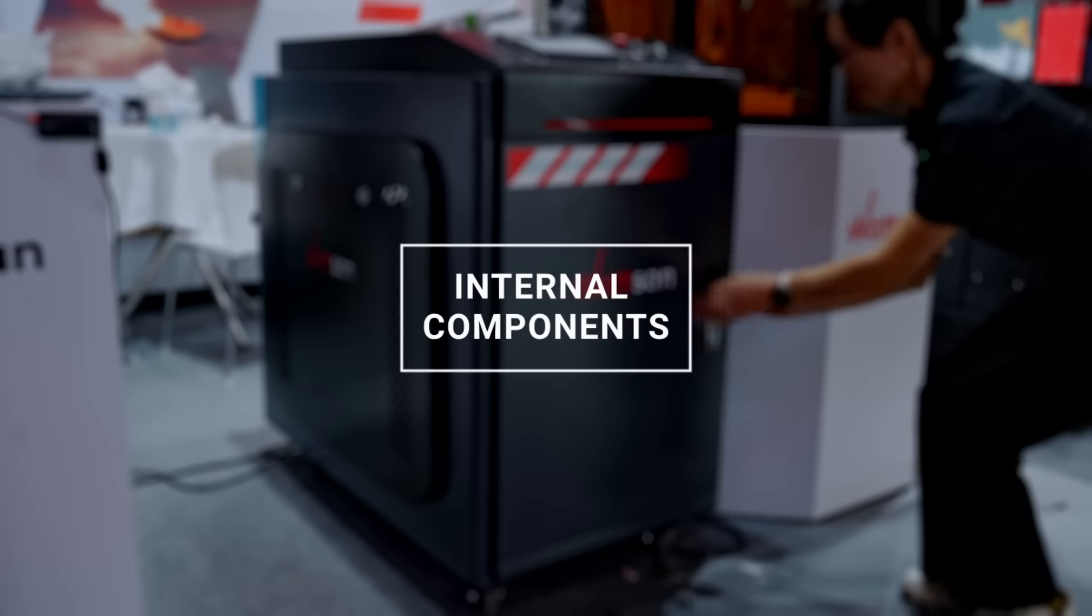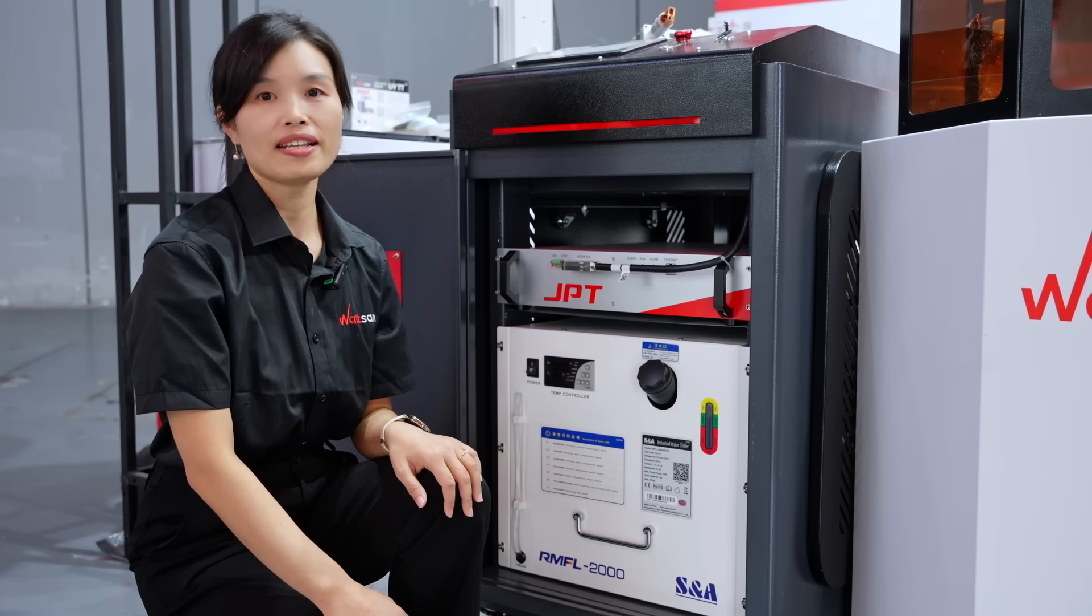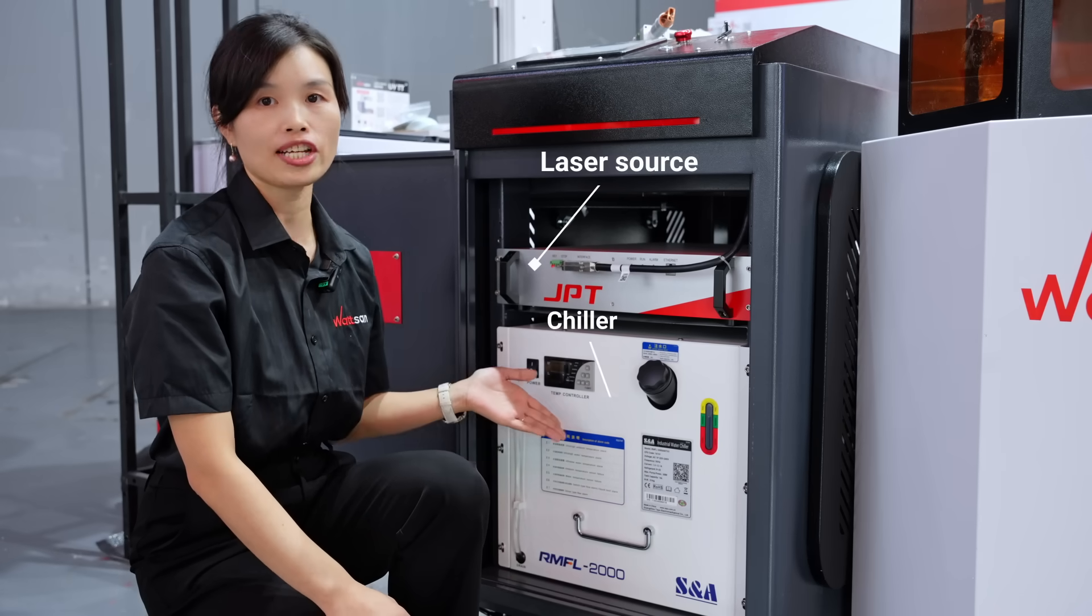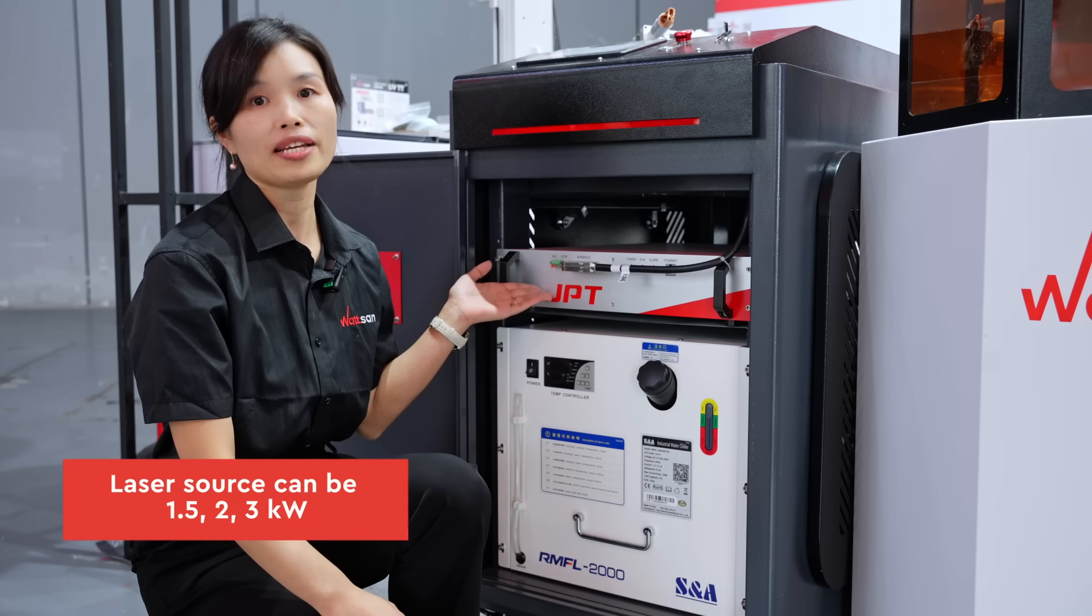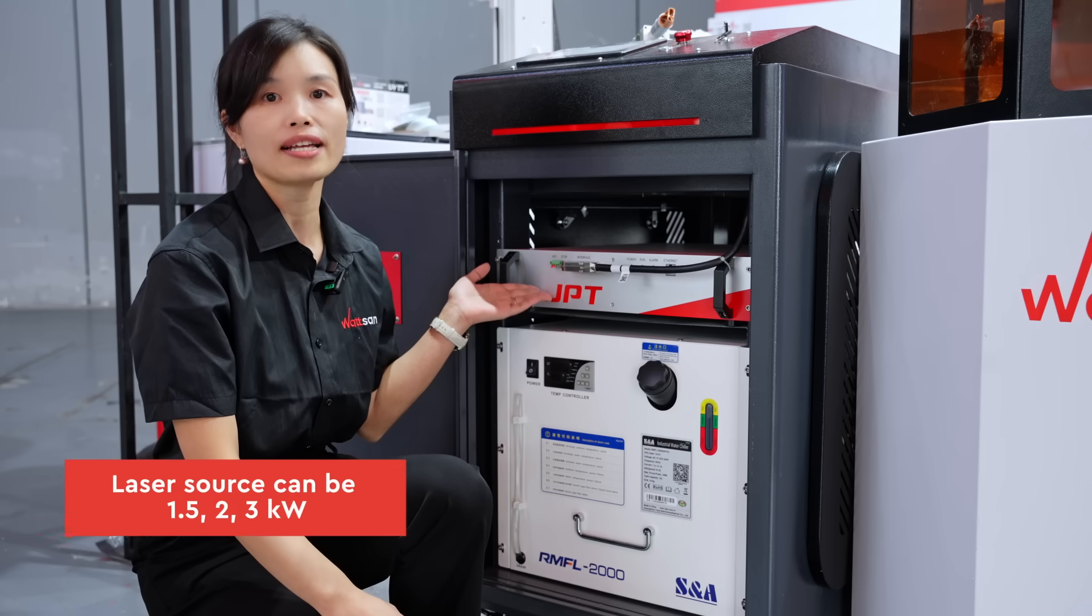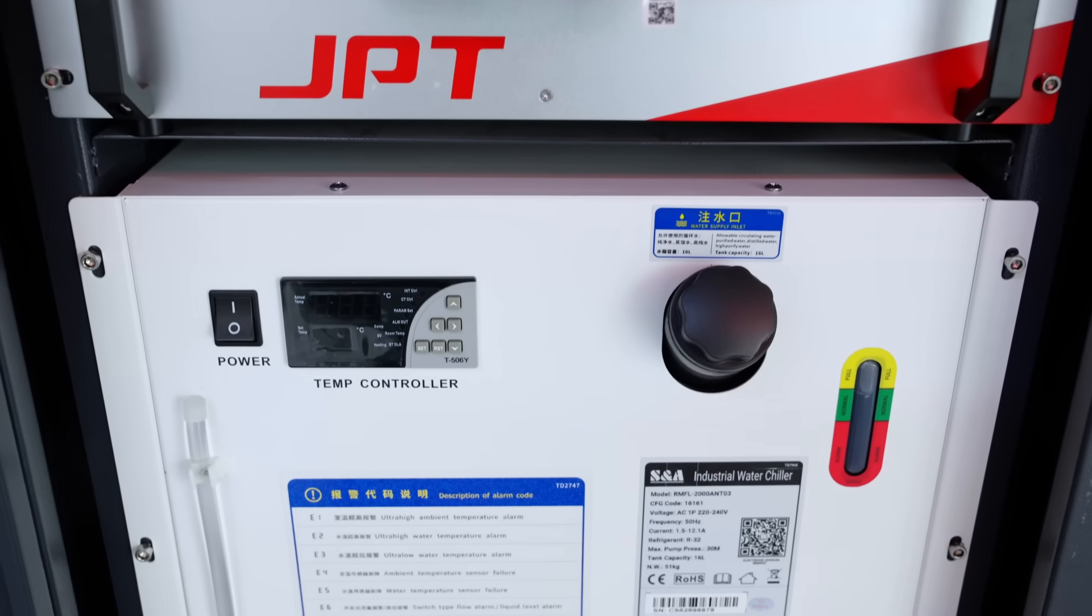Now, about the internal components of the machine. Inside the machine, there's a laser source and a chiller. The first one can be from GPP or RAYCUS. It can be 1.5 or 3kW. We have a 2kW GPP at the exhibition.